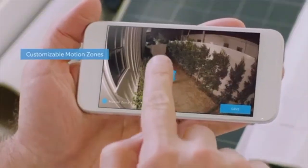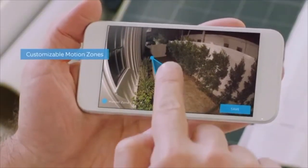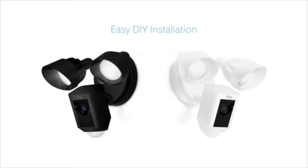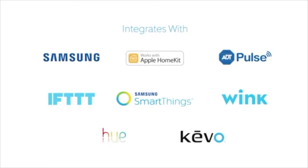You can easily customize Ring's advanced motion detection so you only get notified when it matters. Available in two weatherproof finishes, Floodlight Cam is easy to install on any home and integrates with a variety of smart technologies.